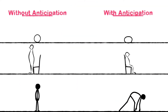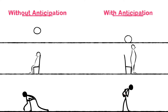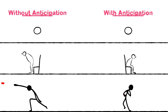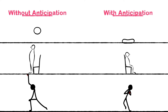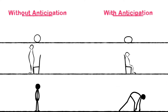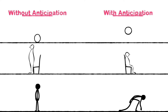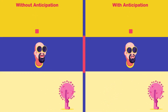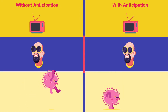A few weeks back, I already made a tutorial on how to apply anticipation in your animation and how applying anticipation can make your animation better — explaining in detail how anticipation can make your animation look more realistic. If you want to check it out, the link is in the description. In this lesson, we are going to learn how to apply anticipation when animating in After Effects.